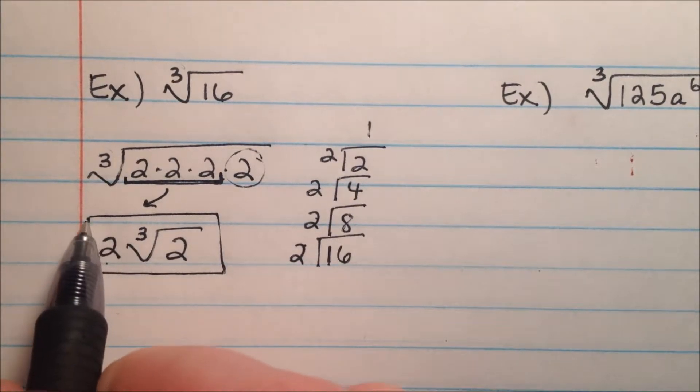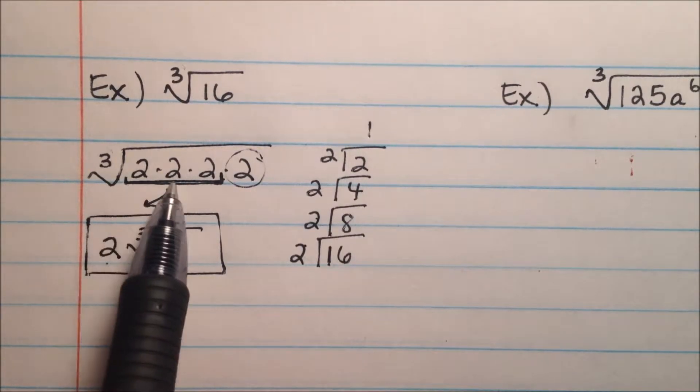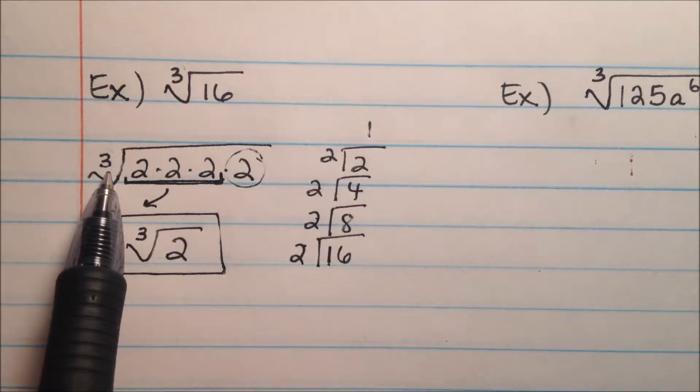So you'll see the only difference between this and doing a normal square root is that instead of looking for groups of 2, we're looking for groups of more than 2. Like in this example, it's a group of 3.